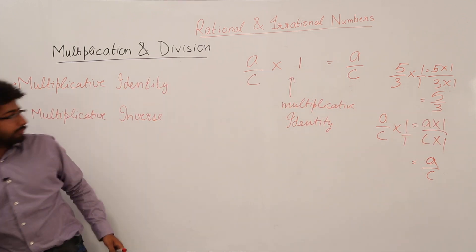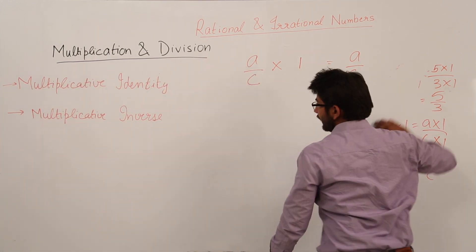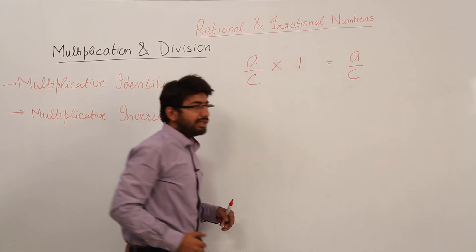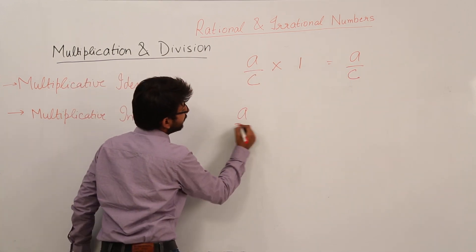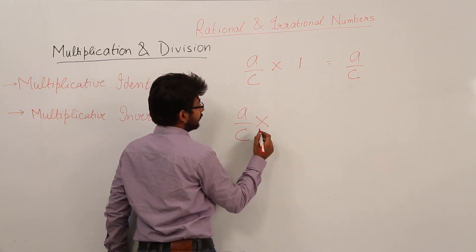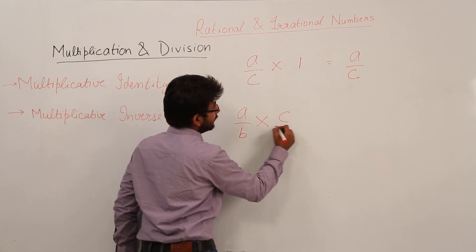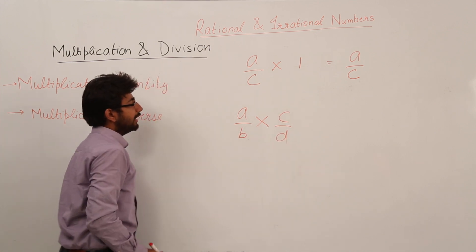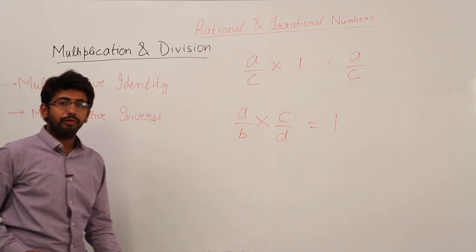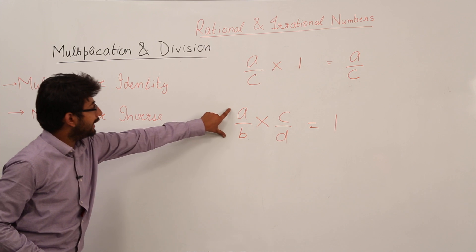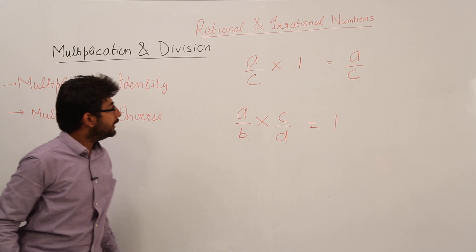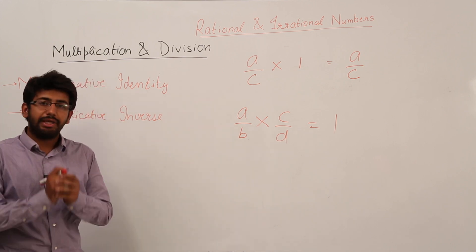Now let us study what is multiplicative inverse. Multiplicative inverse means: if I multiply two rational numbers a/b and c/d, and I get the product equal to 1, then I say that a/b is the multiplicative inverse of c/d, and c/d is the multiplicative inverse of a/b.